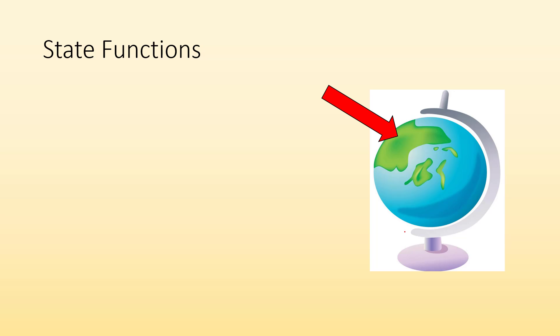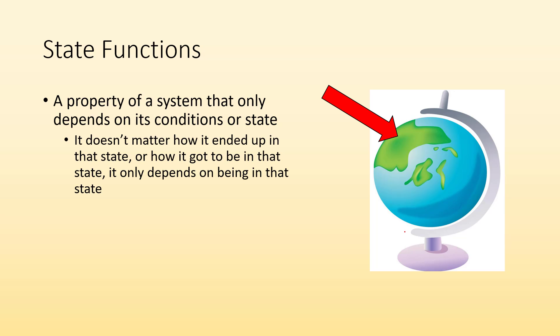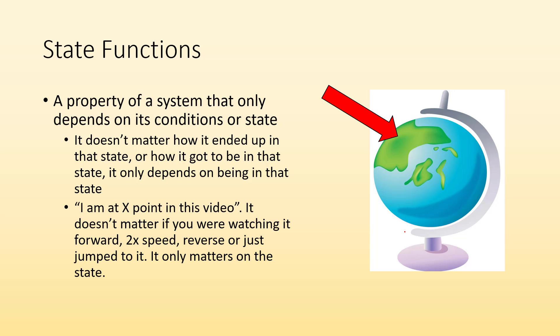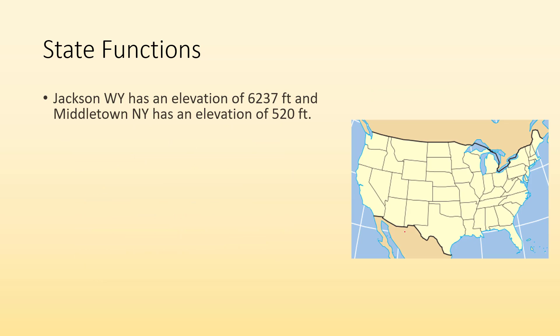State functions. A property of a system that only depends on its conditions or state is called a state function. So it doesn't matter how it ended up in that state or how it got to be in that state. It only depends on being in that state. So for example, you're at X point in this video. That's a state function. It doesn't matter if you were watching it forward like you normally do or double speed or if you were playing it in reverse, super slow-mo. It doesn't matter how you got to this point in the video. This being at this point in the video is a state function.